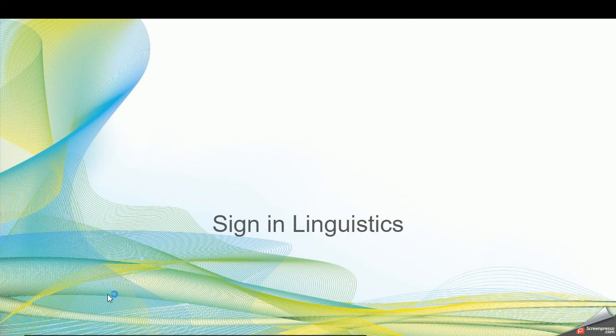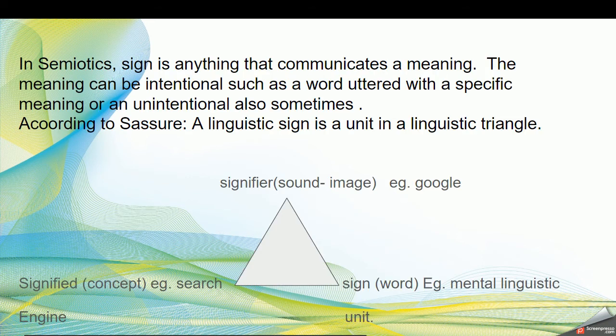Let's learn what a sign is in linguistics. In semiotics, a sign is anything which communicates a meaning — it can be intentional or unintentional. Saussure was a great linguist, and according to him, a linguistic sign is a unit in a linguistic triangle. He gave a triangle to explain what a sign is.